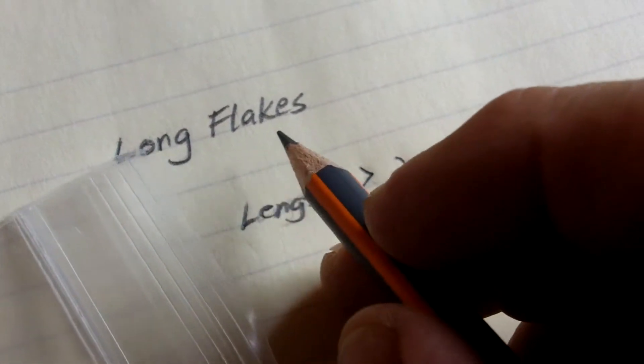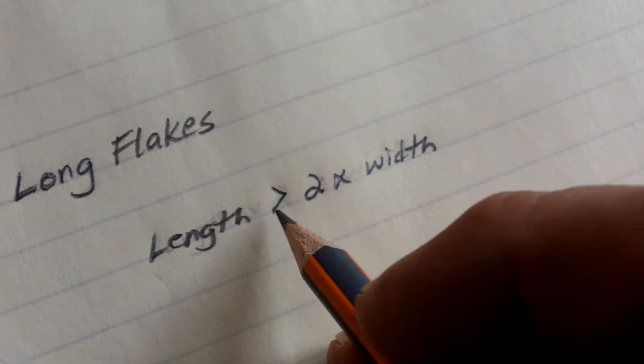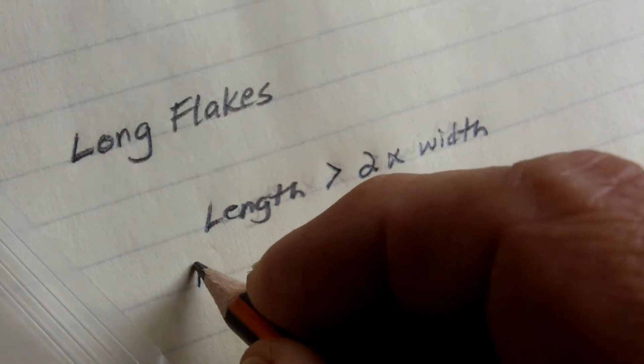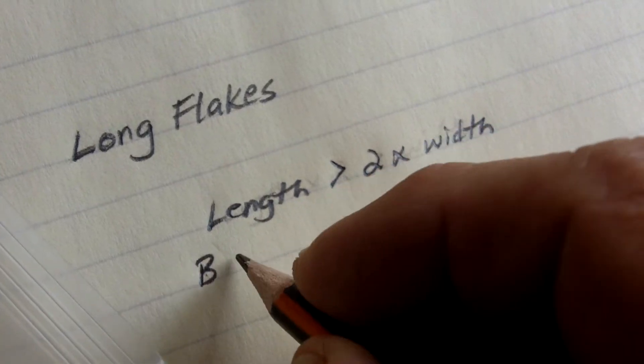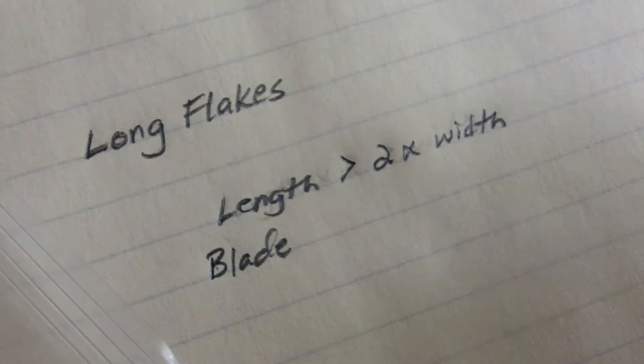And I'll begin by defining what I think a long flake is. The length is greater than two times the width. And sometimes those are called blades also. If a flake exhibits those properties, you can call it a blade also.